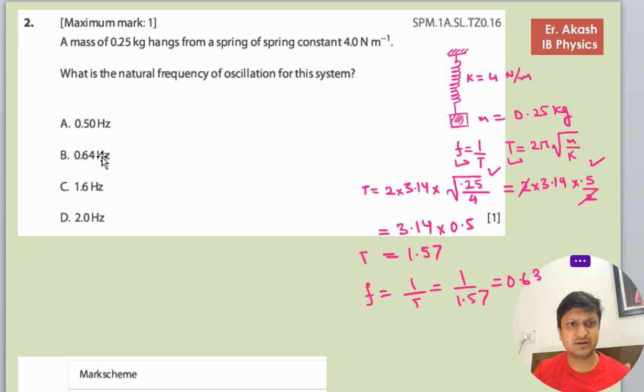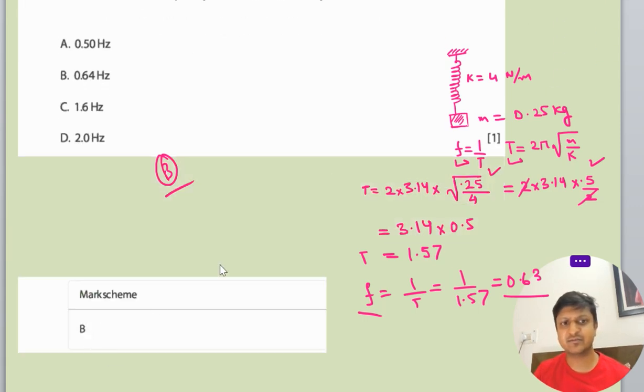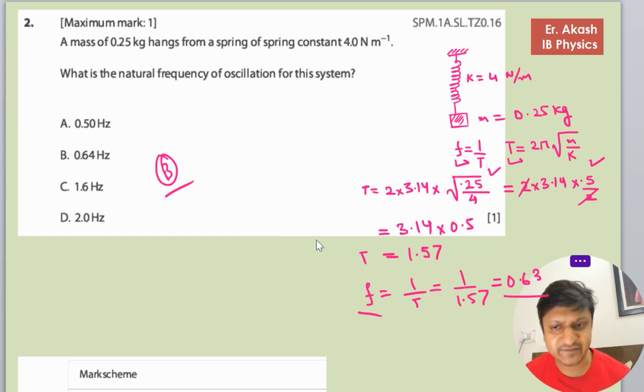Now we will see the options, and we are getting option number B. So B would be the right answer. Let's check the mark scheme—it's B. So our answer is 0.64 Hz.